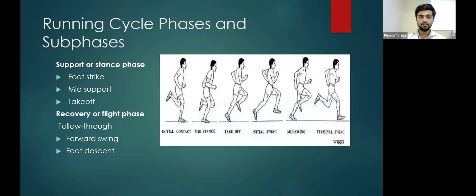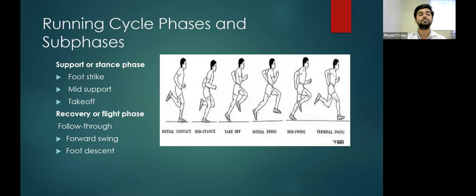Running cycle phases and subphases. Running phases are divided into two main phases. The first phase is support or the stance phase, and the second phase is recovery or the flight phase. These two phases are again subdivided into subphases. The stance phase is divided into foot strike, mid support, and takeoff, as we can see in the diagram. The flight phase is divided into forward swing and foot descent.